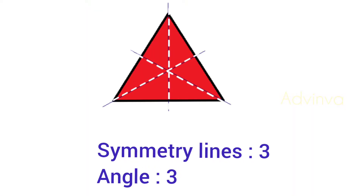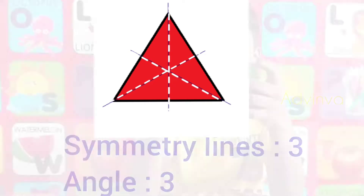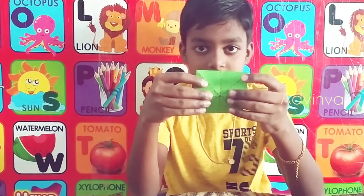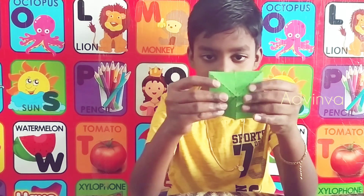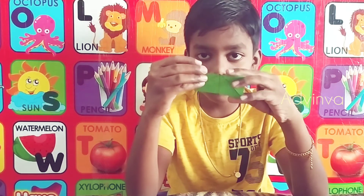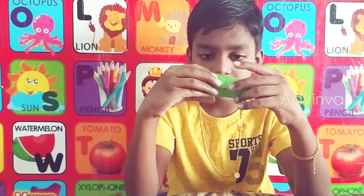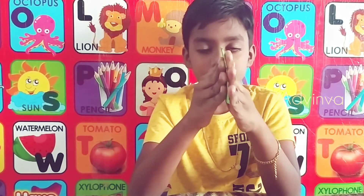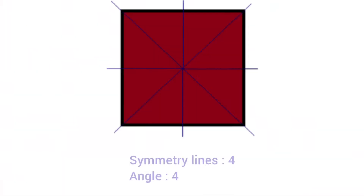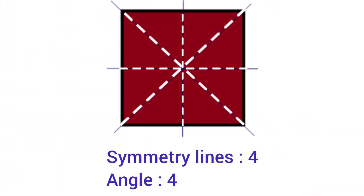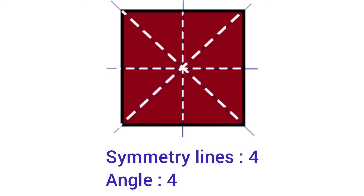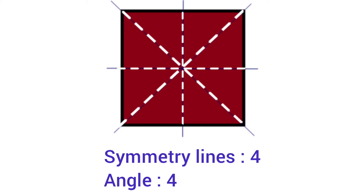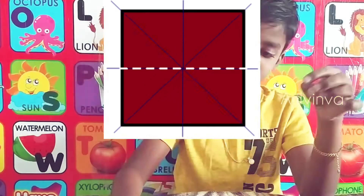A square has a horizontal axis, a vertical axis, and diagonal axes. So how many symmetrical lines does a square have? One, two, three, four — four symmetry lines.